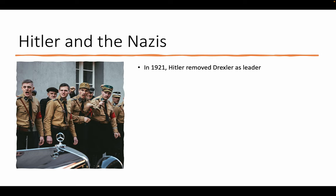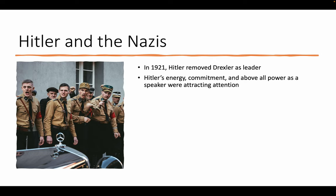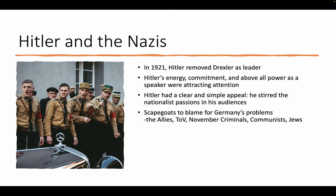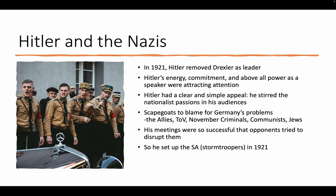In 1921, Hitler removed Drexler as leader. His energy, commitment, and above all his power as a public speaker attracted great attention. He stirred nationalist passions in his audiences — people who wanted a great, strong, wealthy Germany again, as before World War I. Hitler provided scapegoats to blame for Germany's problems: the Allies, the Versailles Treaty, the November Criminals, the Communists, and the Jews. His meetings were so successful that opponents tried to disrupt them, so in 1921 he set up the SA — the Stormtroopers — to defend his meetings and disrupt those of opponents.